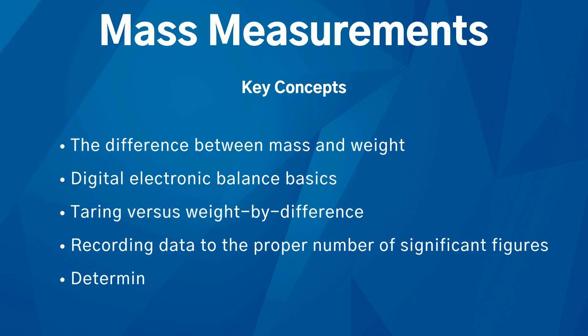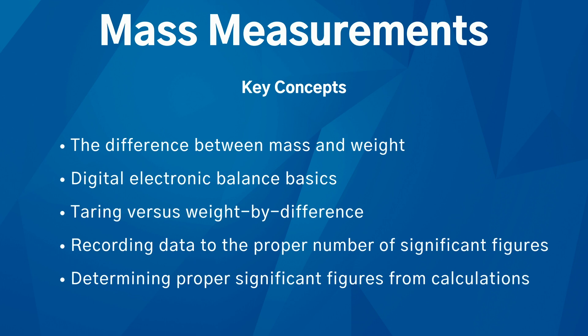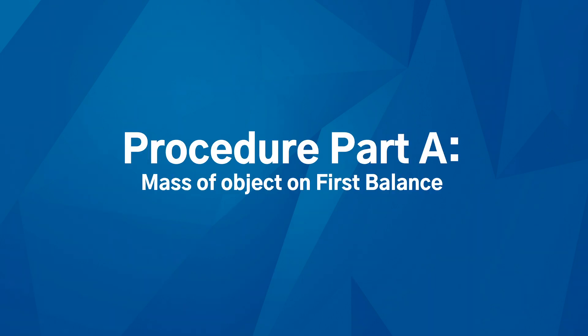The five key concepts are: the difference between mass and weight, the digital electronic balance, the difference between taring versus weight by difference, and how to record data to the proper number of significant figures. If you do a calculation, report your final result to the proper number of sig figs as well.